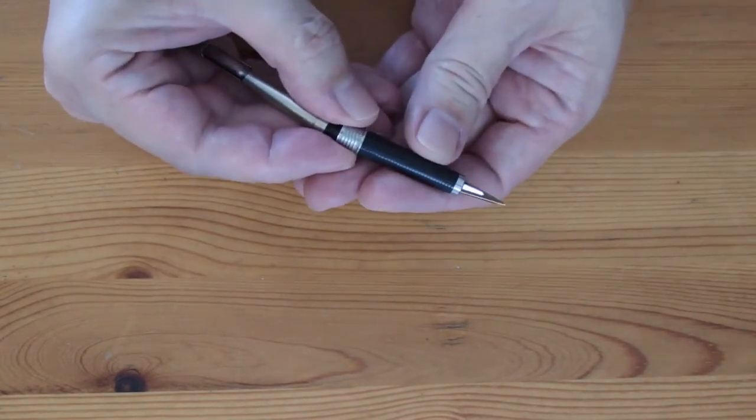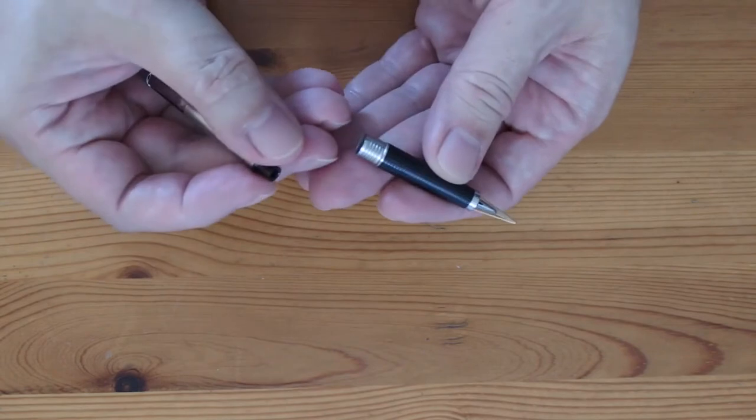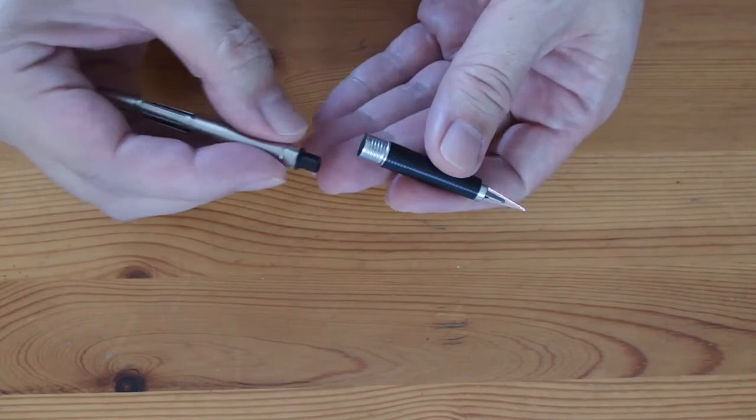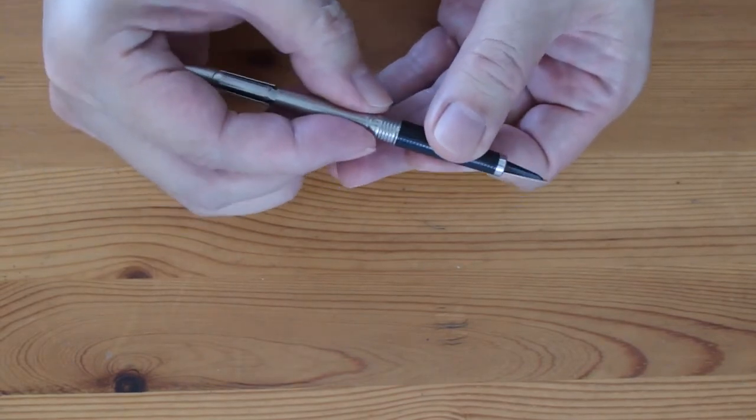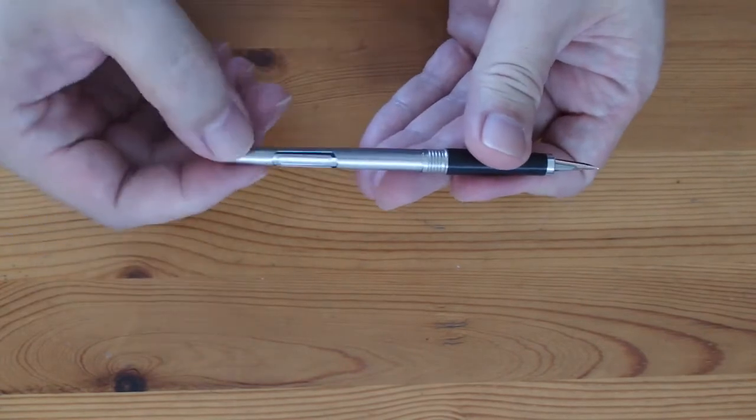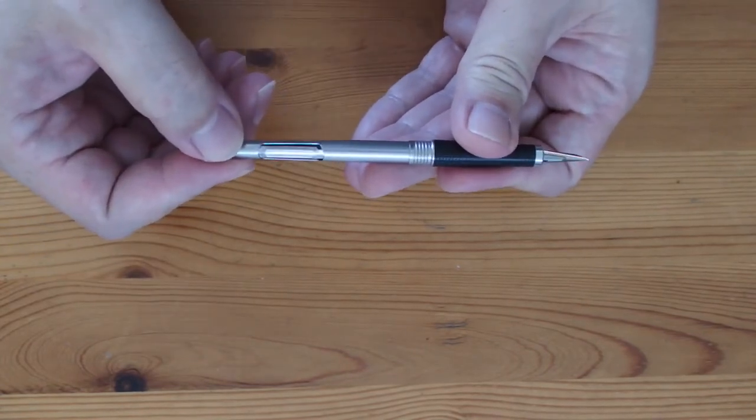Most cartridge pens can be converted into self-filling pens to use bottle ink as well. Instead of putting in a cartridge, you put in what we call a converter. Inside the converter, you tend to get a miniaturized version of a self-filling pen.